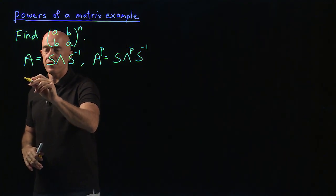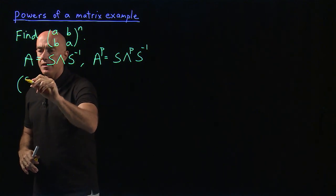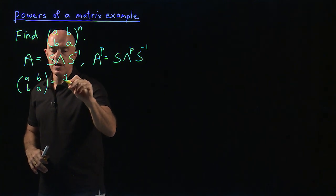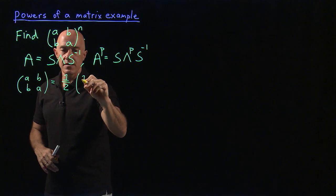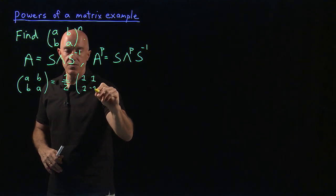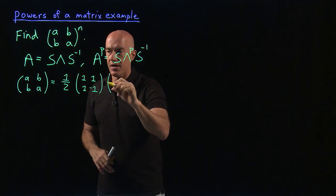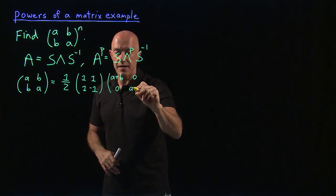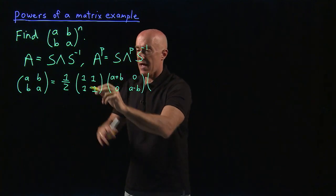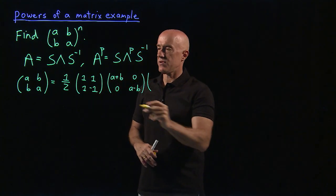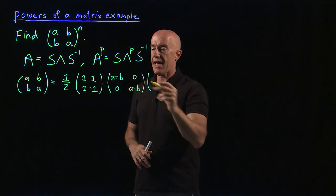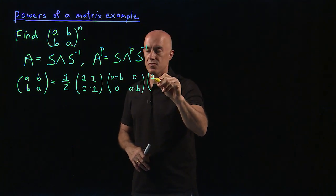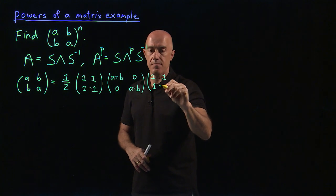So we'll use our result that ABBA is equal to 1 half times the matrix [1, 1; 1, minus 1], times the matrix of eigenvalues, which is [A plus B, 0; 0, A minus B]. And then the inverse matrix is the same as the matrix. So 1 over root 2 times this matrix is S, and then 1 over root 2 times the same matrix is S inverse. So this is [1, 1; 1, minus 1].